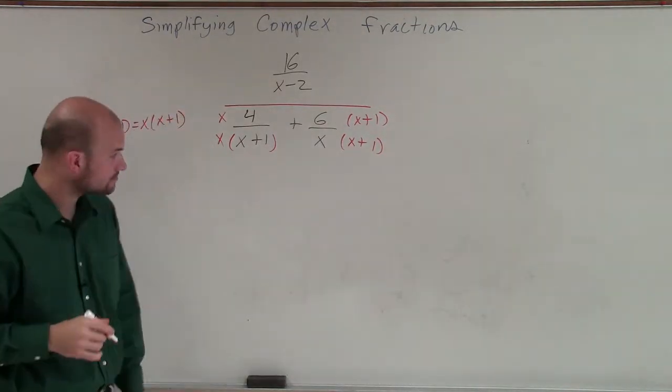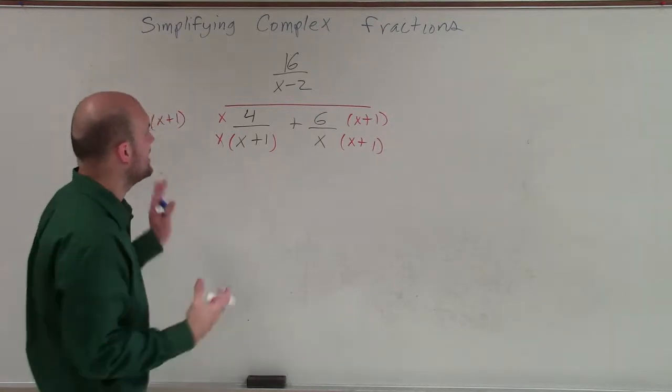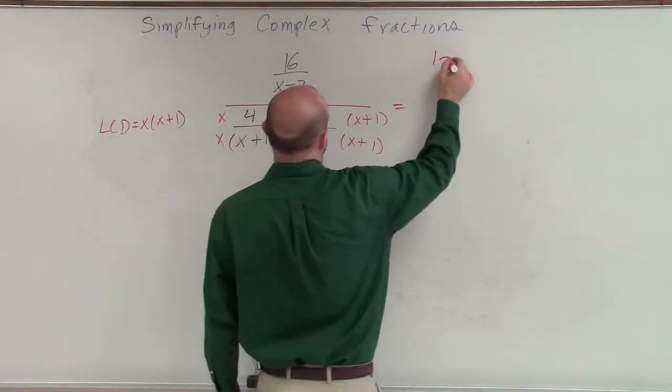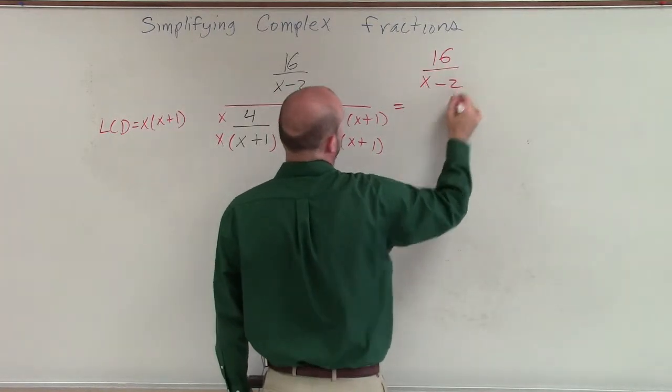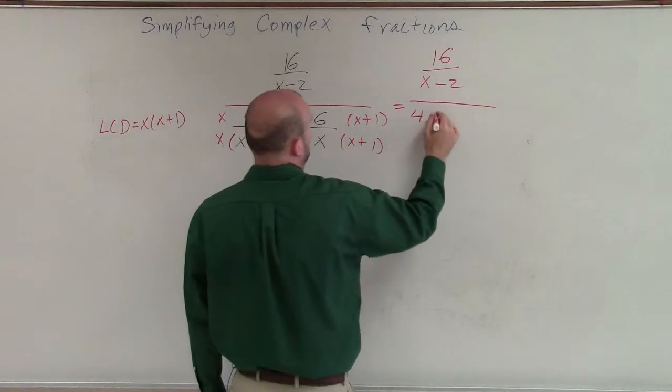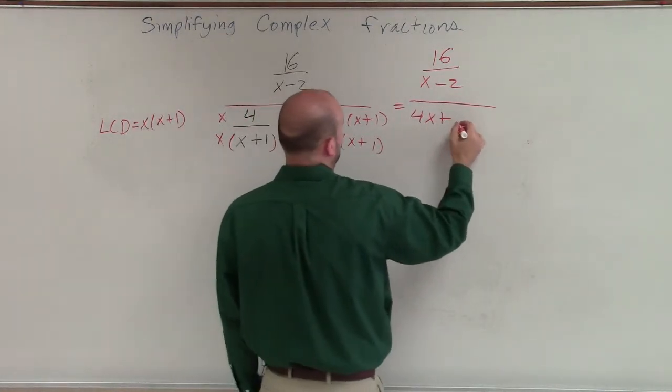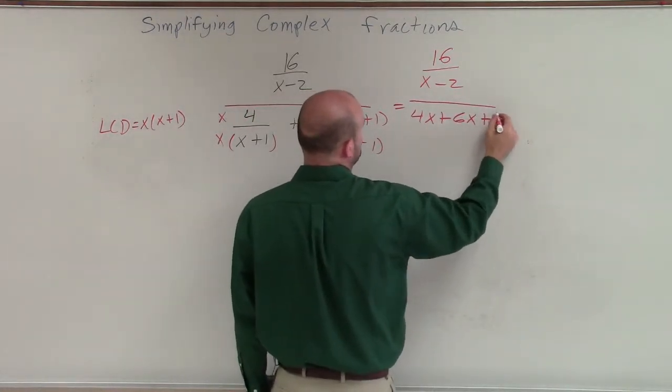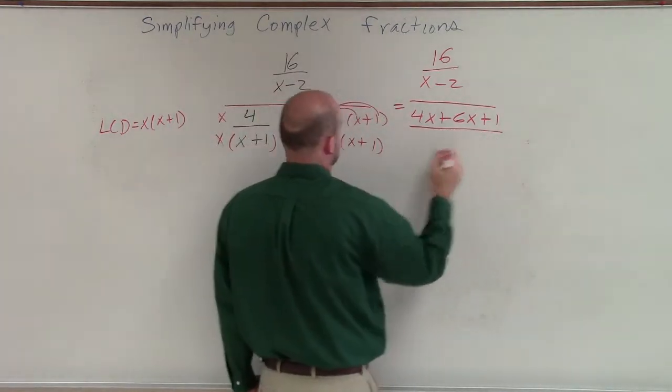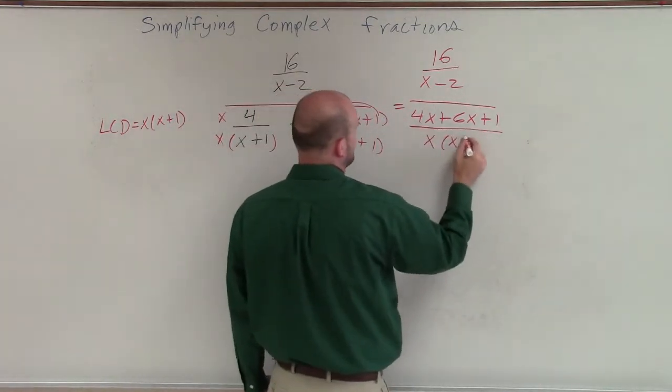So now I've created my common denominator, and I can now combine these two fractions. Therefore, I now have 16/(x-2) divided by... I'll have 4x + 6(x+1), as I apply distributive property, and I'll simplify that in a second, all over x(x+1).